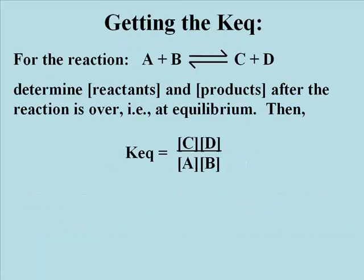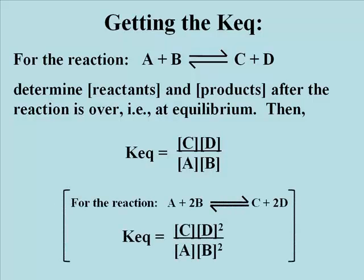To get the equilibrium constant: assume a generic reaction, and when it reaches equilibrium, assay the concentrations of the reactants and products. The equilibrium constant, Keq, is the product of the concentrations of the products divided by the product of the concentrations of the reactants. More accurately, concentrations must be raised to a power determined by the stoichiometry of the reaction. For example, in A plus 2B going to C plus 2D, the Keq equals the concentration of C times the concentration of D squared, divided by the concentration of A times the concentration of B squared.